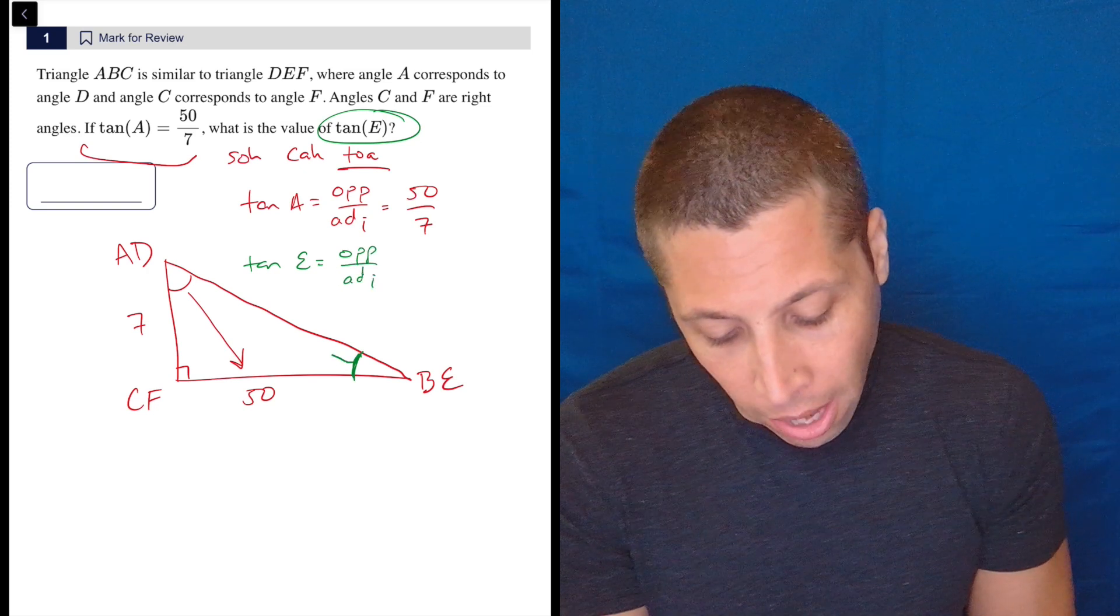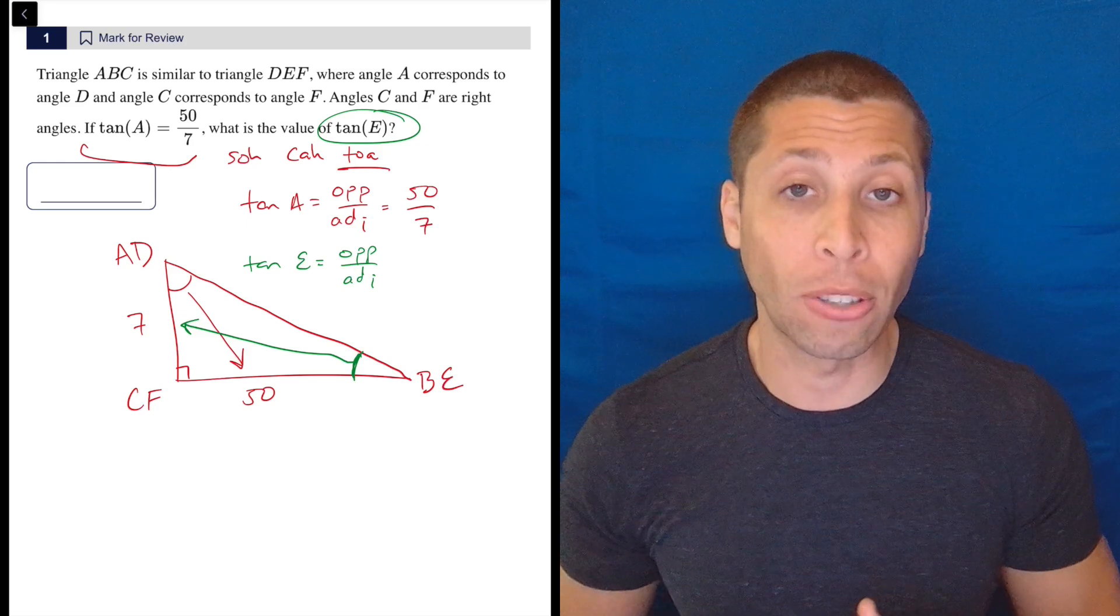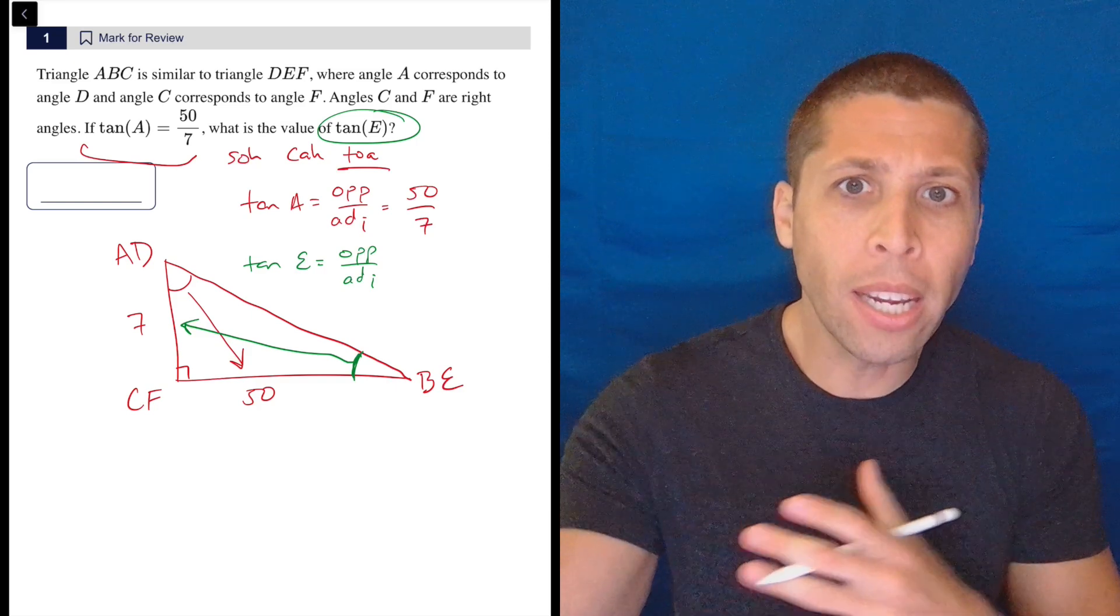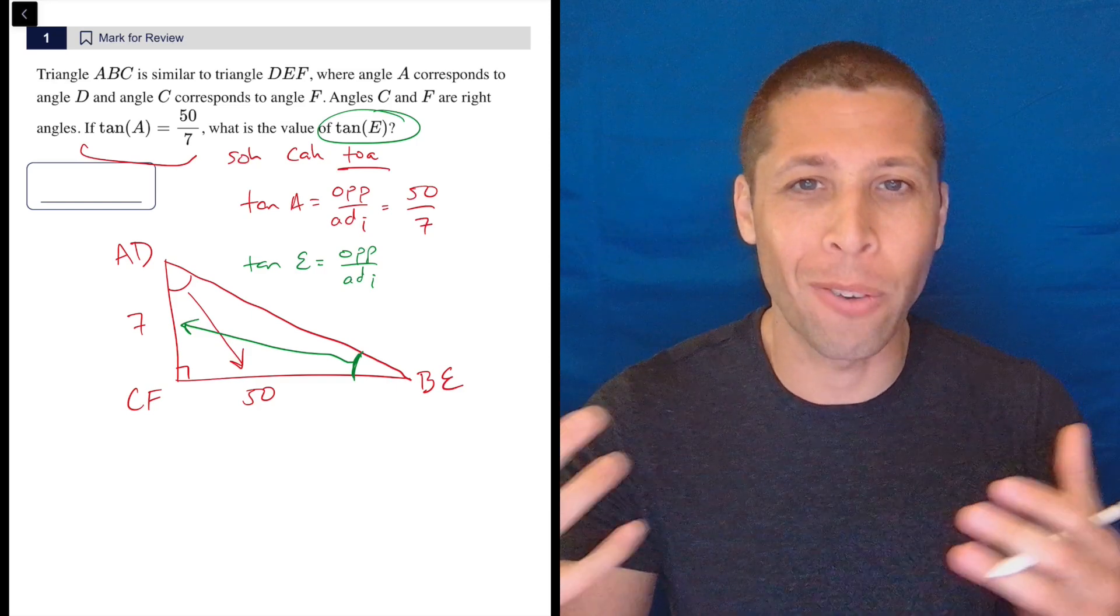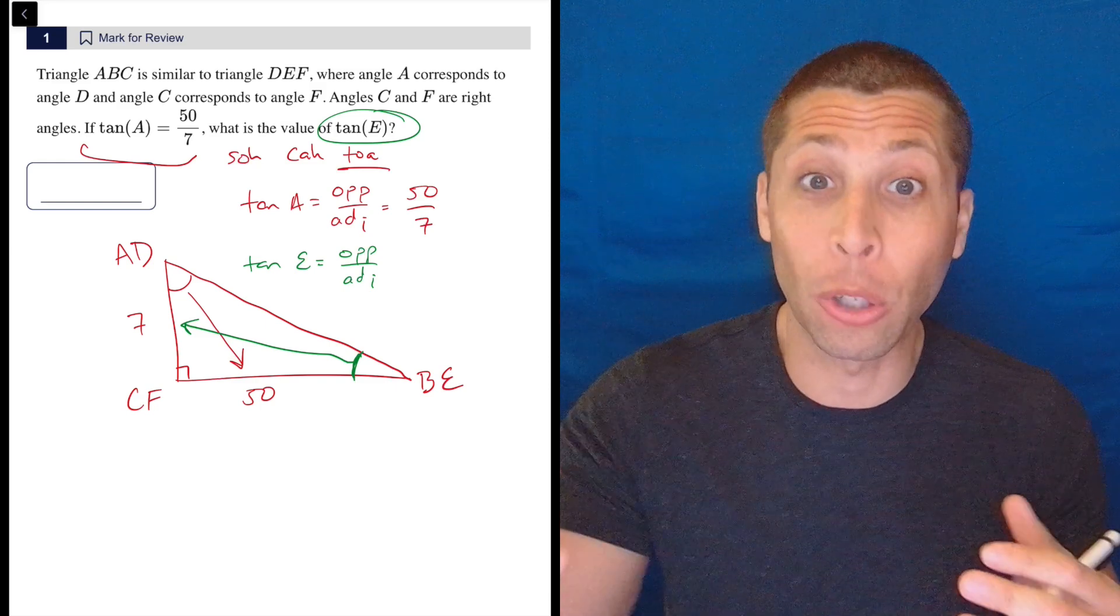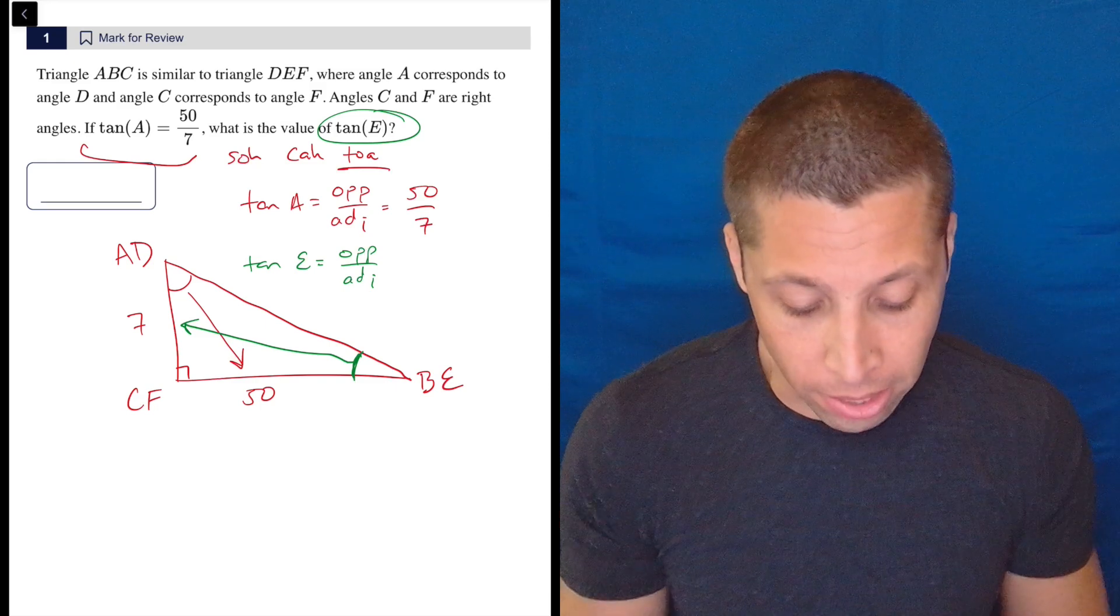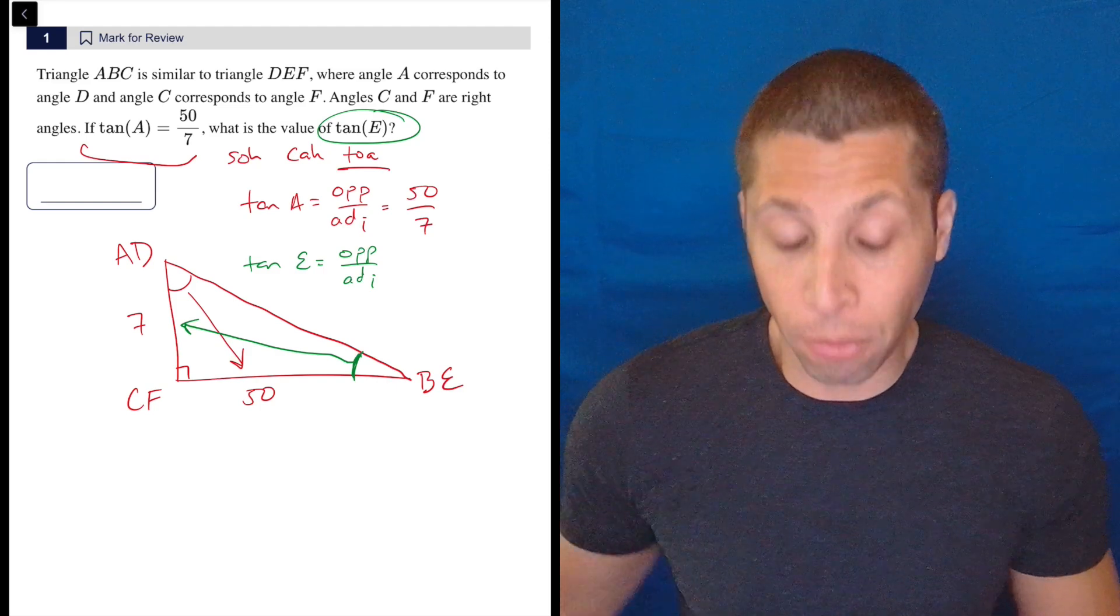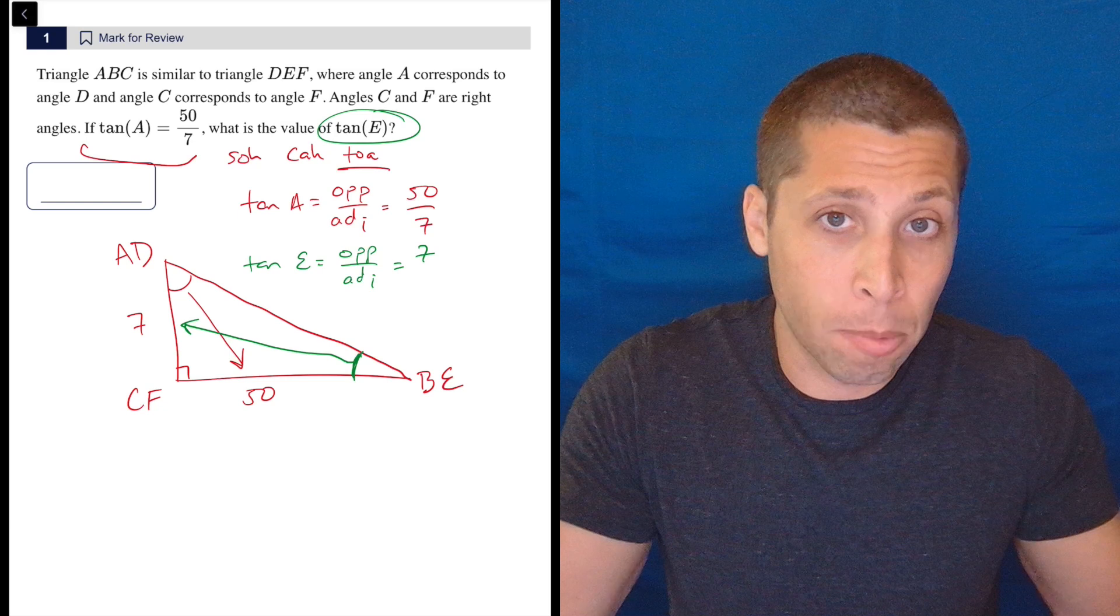Tangent of E is still going to be opposite over adjacent. The difference is now the opposite side is a different side. This is very important for trigonometry - it's very much based on position. If we change the position, we change what is the opposite and adjacent side.